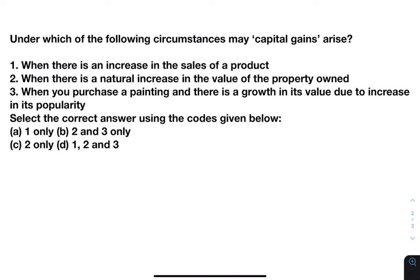Next: under which of the following circumstances may capital gains arise? Options are: when there is an increase in the sales of a product; when there is a natural increase in the value of the property owned; when you purchase a painting and there is a growth in its value due to increase in its popularity. Select the correct answer using the codes given below.